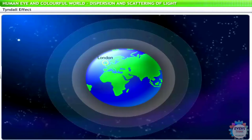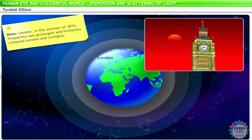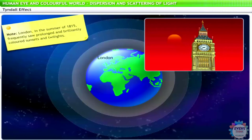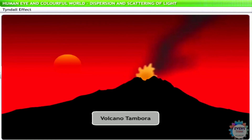In fact, here is an interesting incident related to the Tyndall effect. London, in the summer of 1815, frequently saw prolonged and brilliantly colored sunsets and twilights. This was explained by the Tyndall scattering of sunlight by ash particles in the upper atmosphere. These ash particles were produced by the earlier eruption of the volcano Tambora.